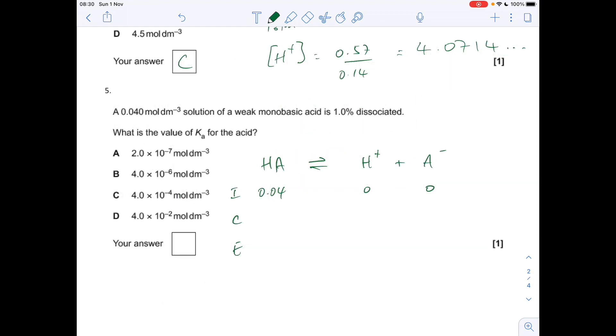Question 5: again there's quite a lot to do to get the mark. We've got this solution of a weak monobasic acid, so I'm calling it HA. It's 1% dissociated, so I've got the equilibrium there and I use this ICE method: initial, change, equilibrium. The initial concentration of HA is 0.04, so there's no H+ or A- at the very start. The change is going to be 1% of 0.04, so 4 times 10 to the minus 4 is going to dissociate. So 4 times 10 to the minus 4 is going to go, which means that the H+ concentration is going to go up by that amount from the one-to-one ratio, likewise the A-.